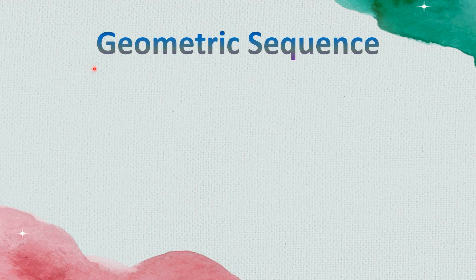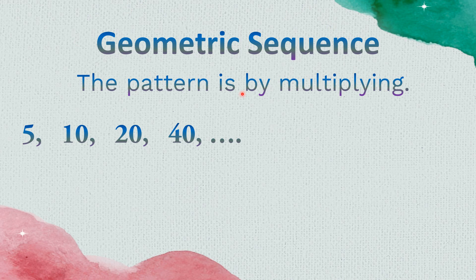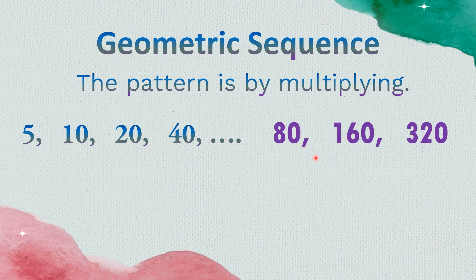Geometric sequence. The pattern of a geometric sequence is by multiplying. In this example — 5, 10, 20, and 40 — the pattern to be multiplied is 2. So: 5 times 2 is 10, times 2 is 20, times 2 is 40. The next three terms after 40 are: 40 times 2 is 80, times 2 is 160, times 2 is 320.